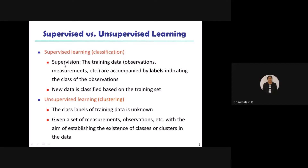Coming to the definition of supervised learning: training data means we are going to train the data. Training is nothing but doing some observations on the data or continuing some measurements on the dataset available in the database. This is accompanied by labels indicating the class of observations. A class is nothing but some dataset.